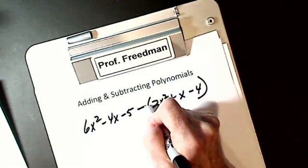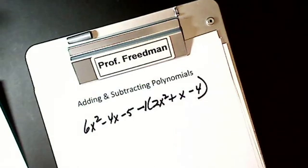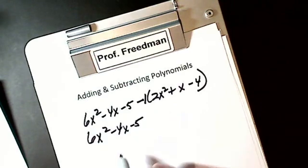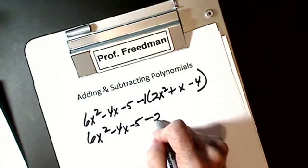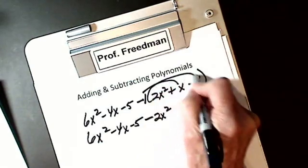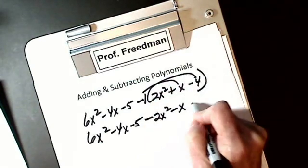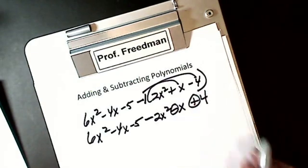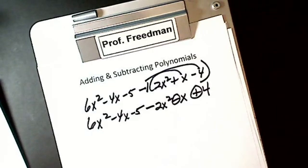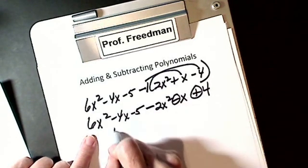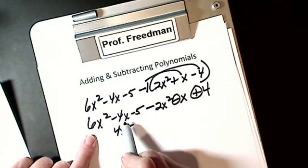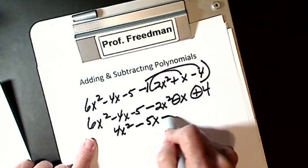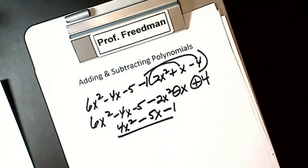Or you can think of this as a 1 and distribute negative 1. So I have 6x squared minus 4x minus 5. This becomes minus 2x squared. This becomes minus x, and it becomes a plus 4. And I don't know why so many people don't change those signs. Then we just combine like terms. Here's my squares. I get 4x squared. Minus 4x minus 1x is minus 5x. Minus 5 and plus 4 is going to give me minus 1.